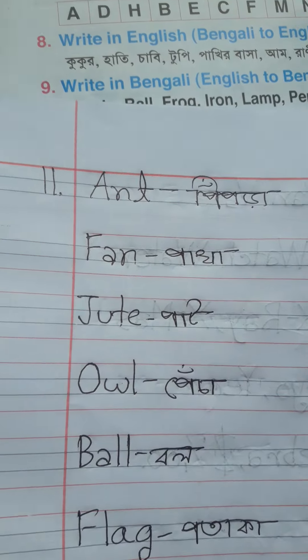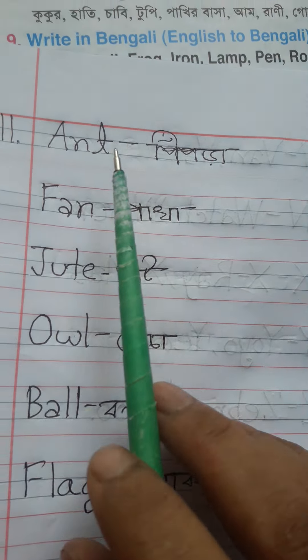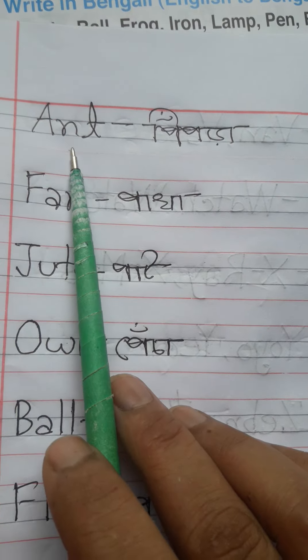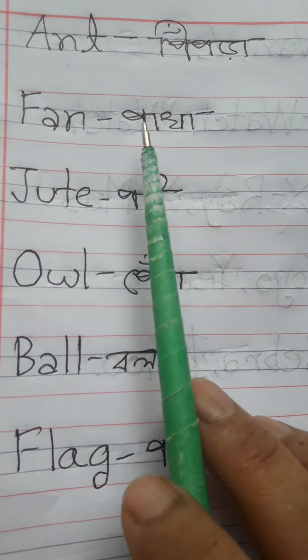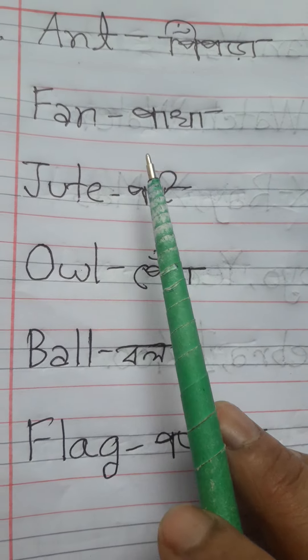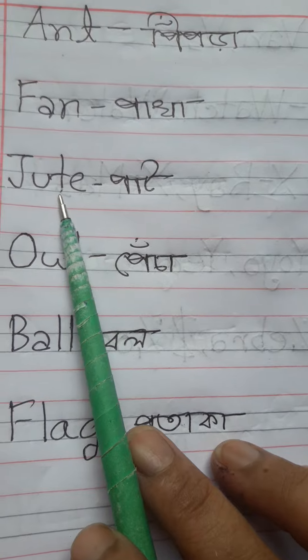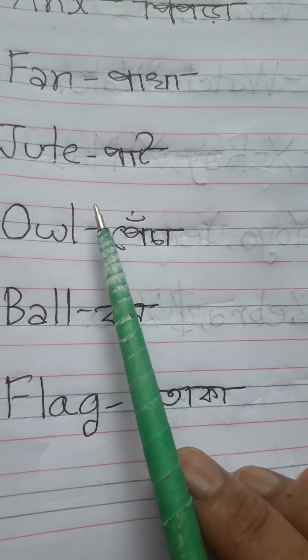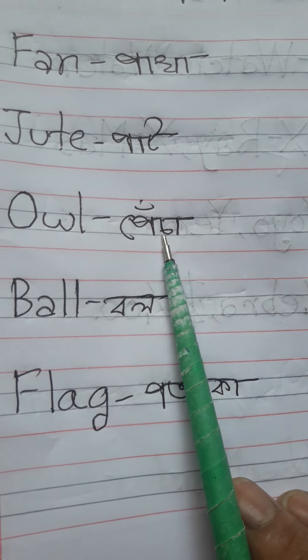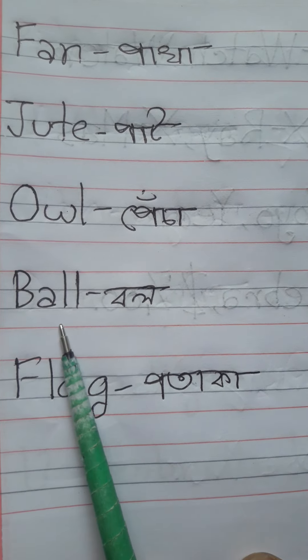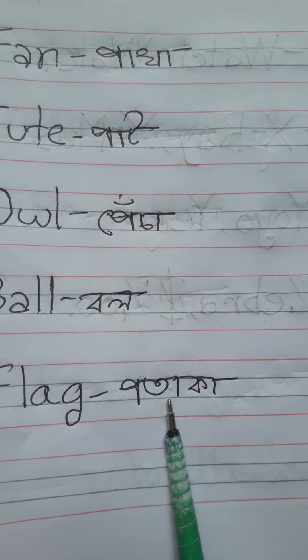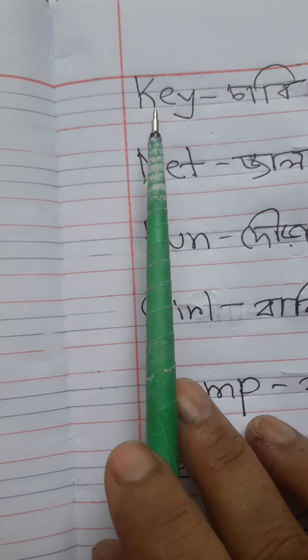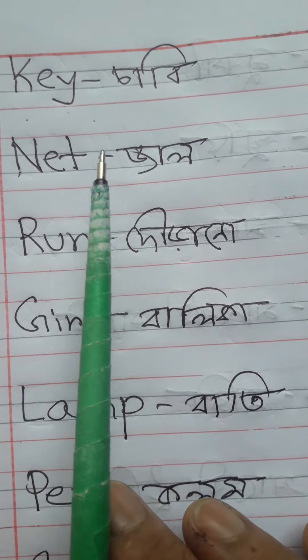আবার পড়ি। Ant অর্থ পিঁপড়া। Fan অর্থ পাখা। Jute অর্থ পাট। Owl অর্থ পেঁচা। Ball অর্থ বল। Flag অর্থ পতাকা। Key অর্থ চাবি।